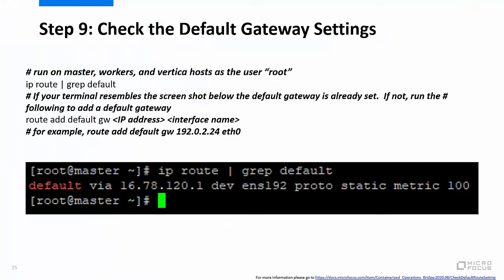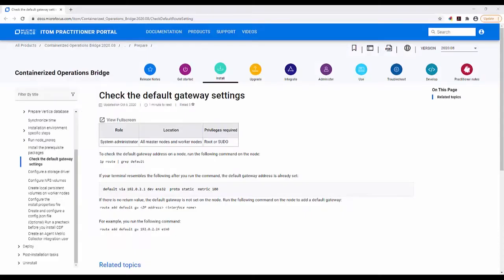Step 9 is to check the default gateway settings. Execute the command shown on the screen on the master, workers, and Vertica host to verify that the default gateway is set. If it is, execute the second command shown on the screen. For more information on how to check the default gateway settings, please go to the URL shown on the screen.